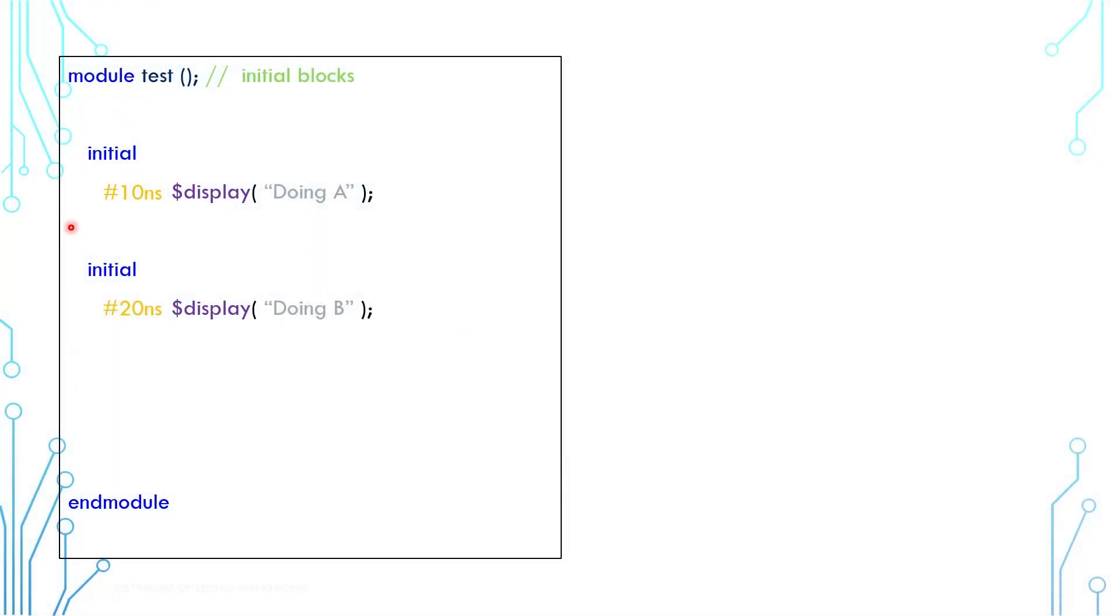We can use several initial blocks to create parallel running execution. In this example, these two initial blocks run in parallel, one takes 10 nanoseconds and another takes 20. Imagine if you want to do C after A and B, you need to know when A and B finish. While this example is too easy because we hardcoded the delay, so we can easily delay C accordingly. But imagine if the delay is random or unknown, it would be difficult to put C at the end of A and B.